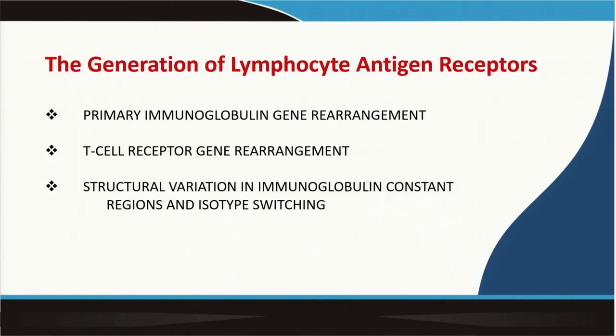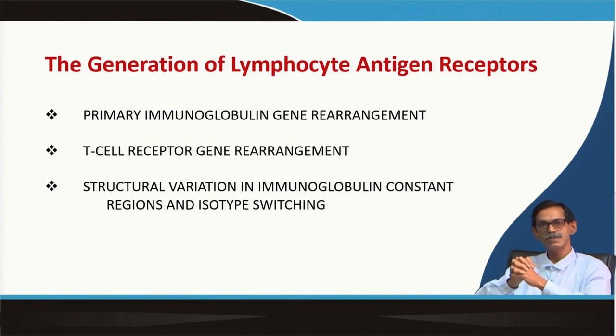So how is this diversity developed? That was a big question, though it was solved long time back by Professor Susumu Tonegawa at MIT. Before that, people did not know what is the origin of this variety — how so much variation in the hypervariable region developed or was generated in antibody as well as T cell receptor.